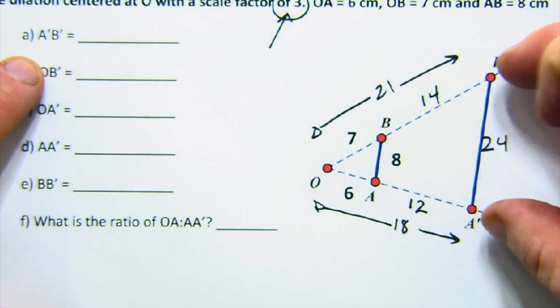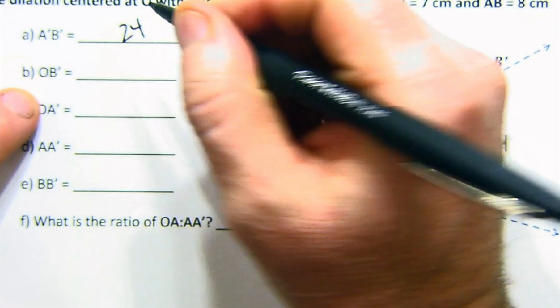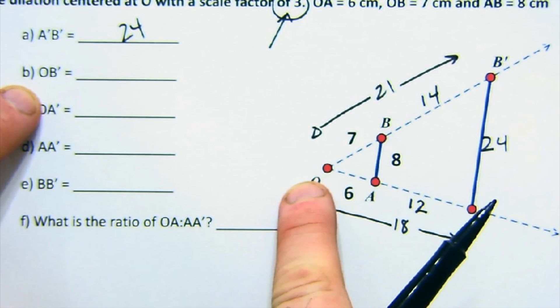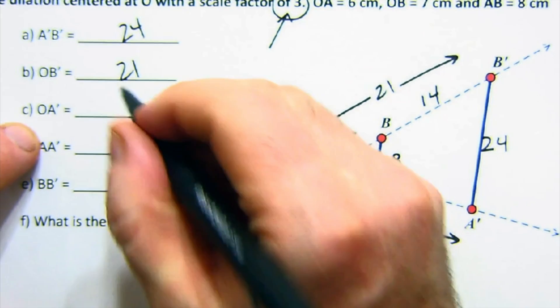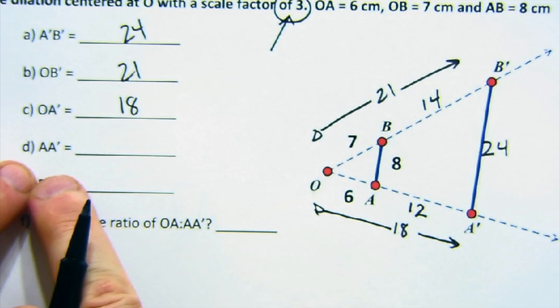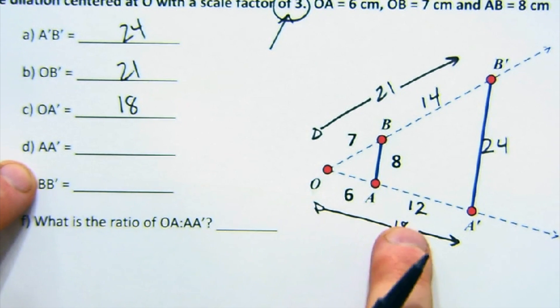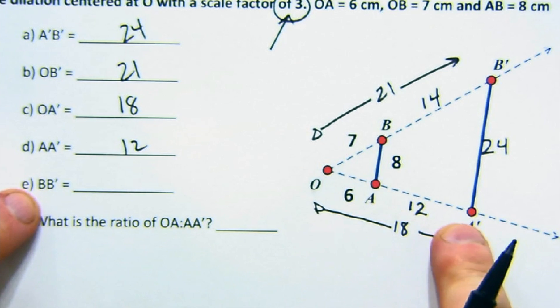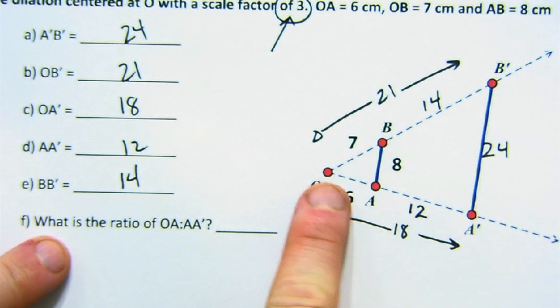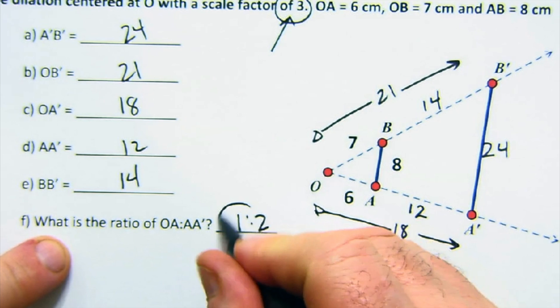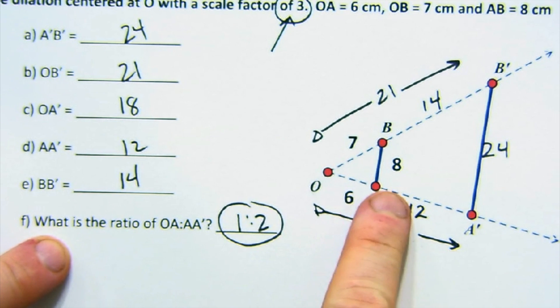But let's quickly go through this. This would be 24 here. O to B prime would be 21, and that's the three times bigger. O to A prime would be 18. And this is where it's now going to ask us about pieces. So this would be 12 as a piece from A to A prime, and B to B prime would be 14. And then it says, what's the ratio of O to A as A to A prime? That's a one-to-two ratio. Now, again, don't confuse. Those are the ratio of the two little pieces there. But the full dilation was a one-to-three dilation.